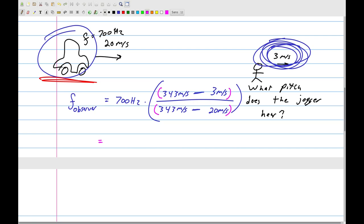So when we type this into our calculator, if you're not using one of the fancy TI inspires, you're probably going to end up having to do something like this. 700 hertz. Open. Open again. 343 minus 3. Close. Divide. Open. 343 minus 20. Close parentheses. Close parentheses again. And if you type that into your calculator, let's see here. I got, when I did this, I got 736.842.